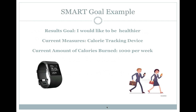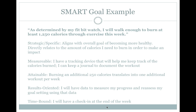Let's apply what we have just learned. Let's pretend that in the upcoming new year, you would like to become more healthy. You have a tracking device that calculates the amount of calories you burn each day, but you aren't sure how to use that information to help you lose the weight. You have been using the device and you know that you burn about 1,000 calories per week. Let's create a short-term SMART goal that can help you achieve your long-term results of becoming more healthy. In order to effectively write this SMART goal, we need to know our current status. Since we know the amount of calories we already burn each week, we can increase that amount and assume we will see results.